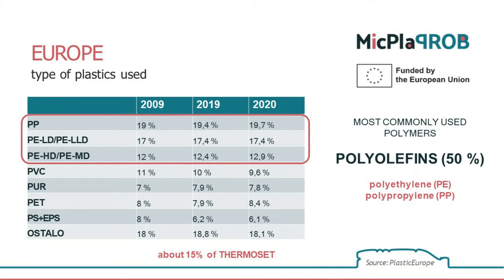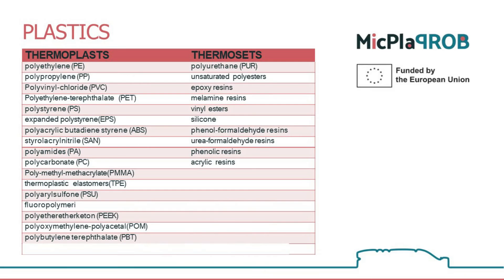Thermosets, on the other hand, are a family of polymeric materials that change chemically when heated, so they cannot be reversibly converted and reused in this form. Among the most commonly used materials we encounter in everyday life, 15% are thermosets, while thermoplasts make up the majority with a long lifespan.